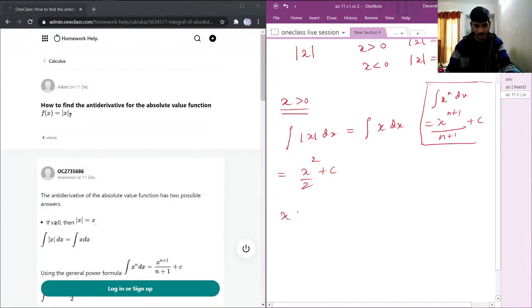When x is less than 0, then we have integral of -x dx. Again I will use the same property. I will get this answer: -x²/2 plus c.